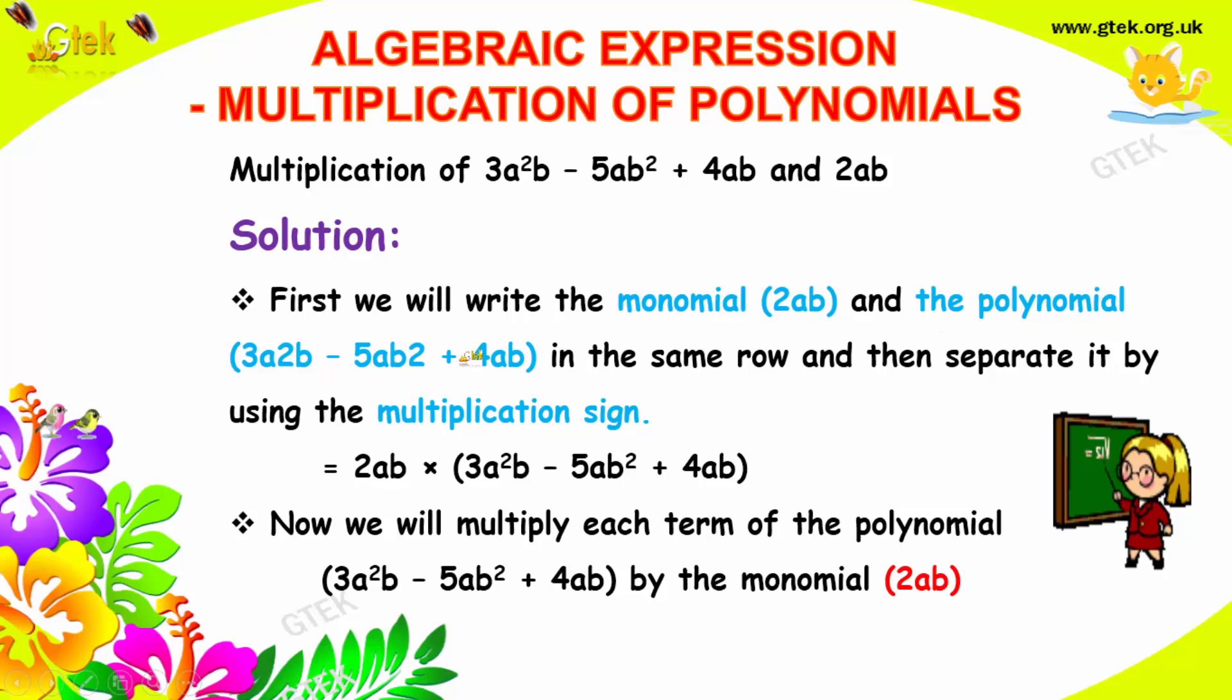I am trying to multiply the two things: 2ab and this one, 2ab into 3a²b - 5ab² + 4ab. Now we need to multiply the numbers, the terms, the like terms. 2 and 3 should be multiplied, a and a² should be multiplied, b into b, multiply.